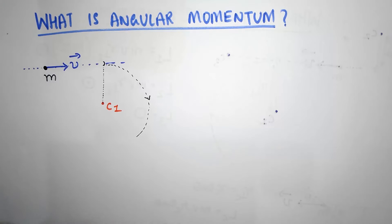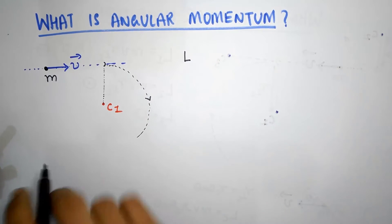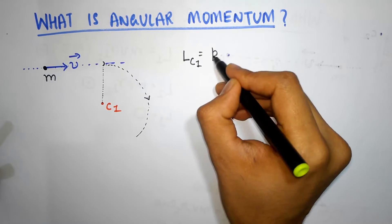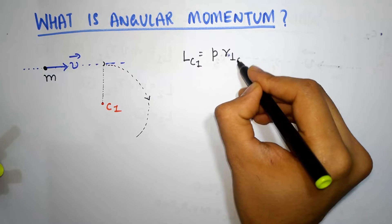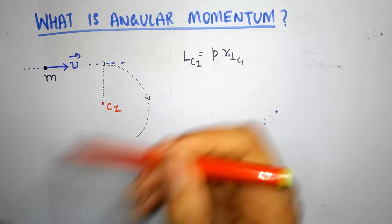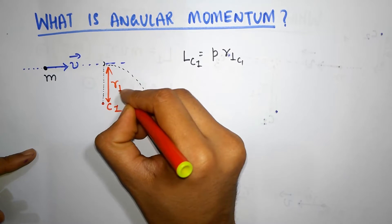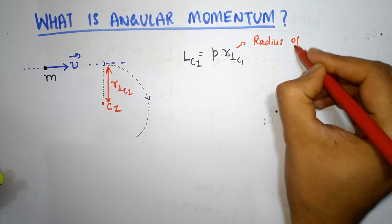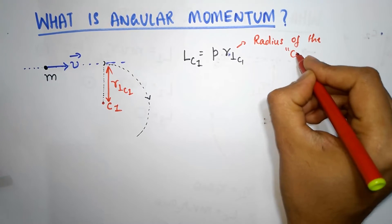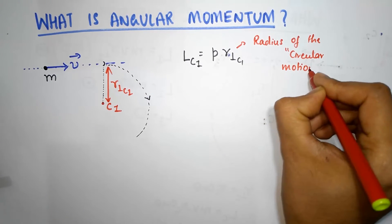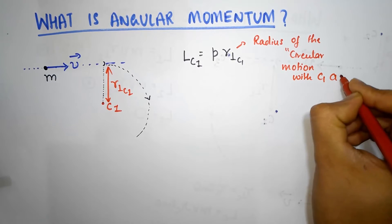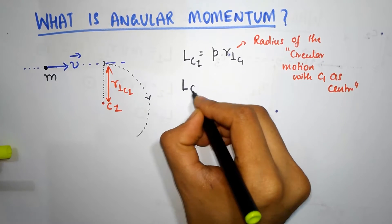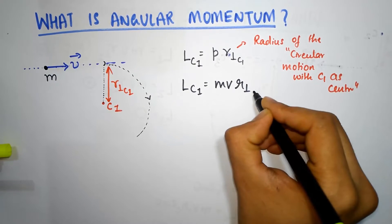So now the definition of angular momentum is the following. The angular momentum of the particle with respect to point C1 is defined as the momentum of the particle P multiplied by R_perpendicular with respect to point C1. R_perpendicular is this distance — that's the radius of the circular motion with C1 as center. Since P equals mv, we can also write angular momentum as mv times R_perpendicular with respect to C1.